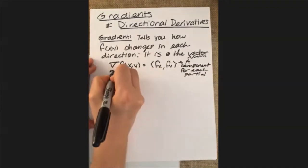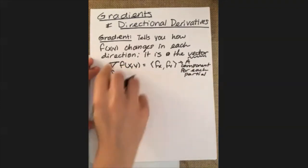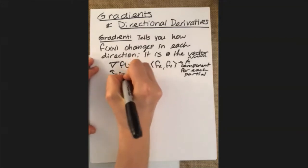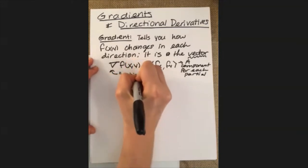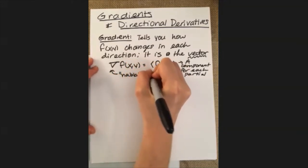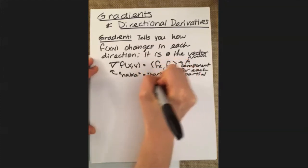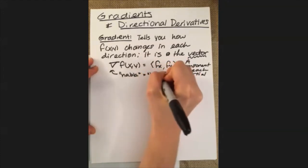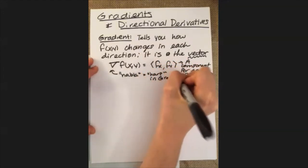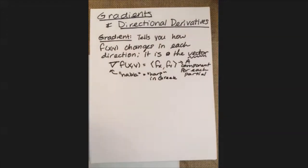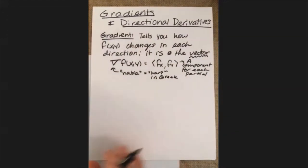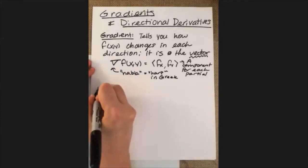Also just a fun fact: this symbol is an upside-down triangle called a nabla, which means harp in Greek. Not that you really necessarily need to know that — it's just kind of a fun fact. But anyway, this is the idea behind a gradient: it's just another way to talk about the rate of change of f and how it's changing in each of the different directions of its variables. So let's look at an example.